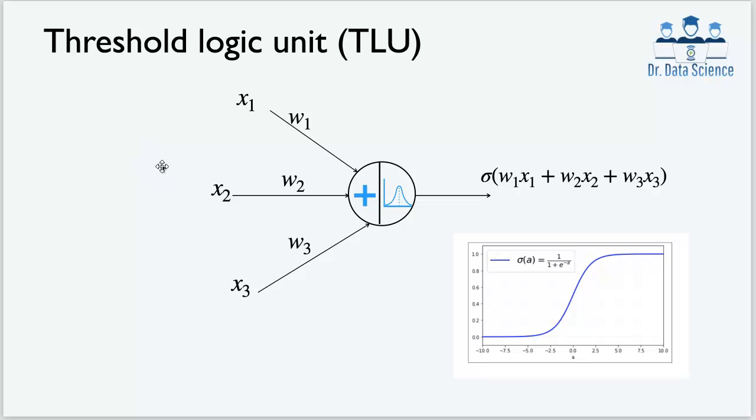To get us started, let us define a threshold logic unit, or what here I just call a unit. Each unit has two parts. The first part, as you can see here, is a weighted sum or combination of the inputs. So we have these connections w1, w2, w3 and the inputs x1, x2, x3. What happens is that each of these inputs will get multiplied by the corresponding weight, for example x1*w1, x2*w2, and we add all of them together.